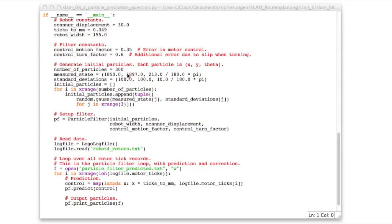And now I need to generate some initial particles. So in this case, I use 300 particles. And here's my measured state and my standard deviations for x, y, and the heading.